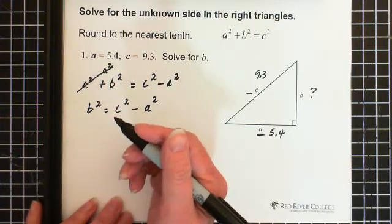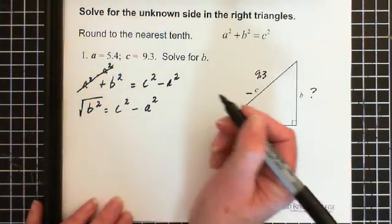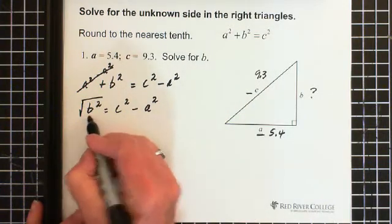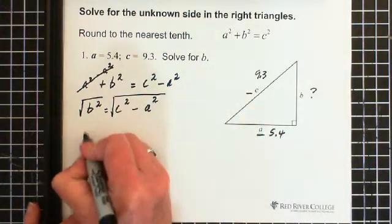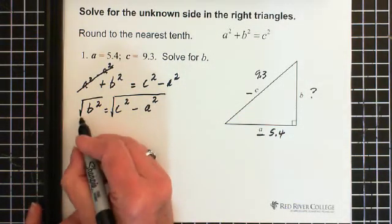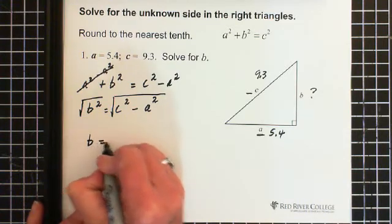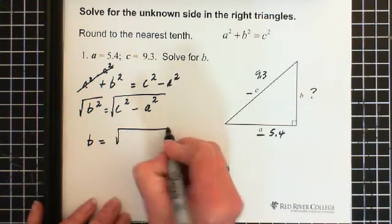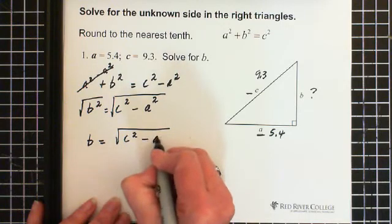And I need it to be just B. So then what I do to get it to be B is I square root. But if I square root on this side, I have to square root on the other side as well. So I end up with, and the square root of B squared is B. And B equals the square root of C squared minus A squared.